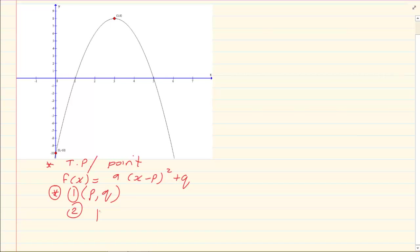Number two, you substitute your point. And your aim is always to solve for a. And then depending if they ask you to rewrite it in a certain form, then you would simplify or get rid of all brackets depending on what they say.